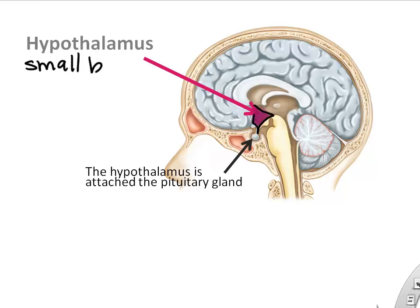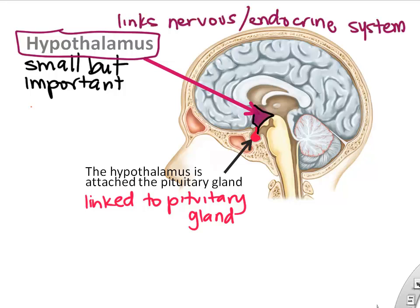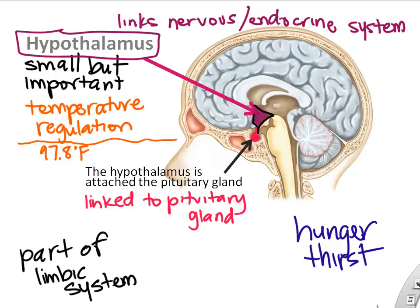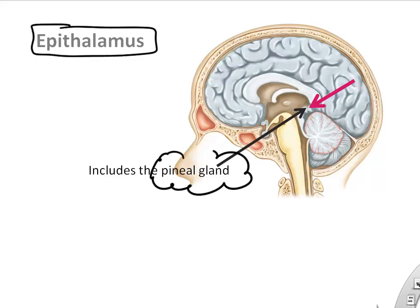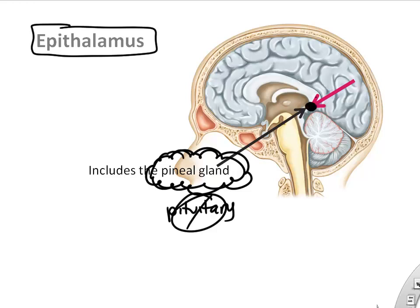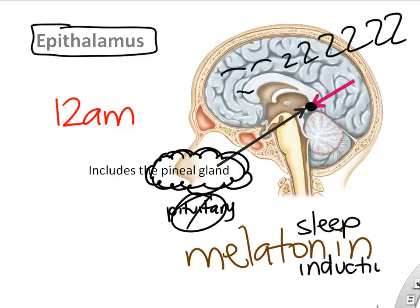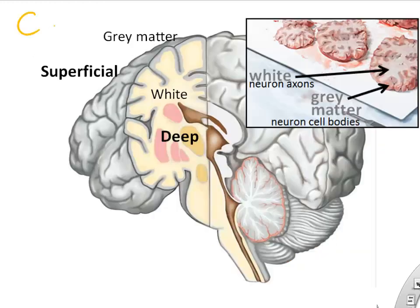The hypothalamus is below the thalamus — very small but amazingly important. It is the link between the nervous system and the endocrine system through its connection to the pituitary gland. It has neurons that regulate body temperature, and parts are involved in hunger and thirst. It is also part of the limbic system involved in emotions, and it makes hormones that signal to the pituitary gland. The pineal gland, or epithalamus, makes the hormone melatonin, which induces sleep — for example, at midnight you get a spike in melatonin that makes you sleepy.